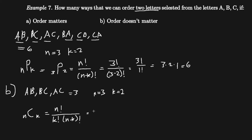Plugging in, this equals 3 factorial over 2 factorial times (3 minus 2) factorial, which is 1 factorial. We can simplify: 3 factorial is 3 times 2 factorial, over 2 factorial times 1. The two factorials cancel, giving us just 3. This is what we call combination — written as '3 choose 2.' For permutation it would be '3 permute 2.'